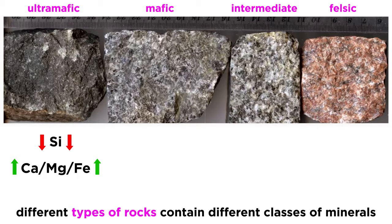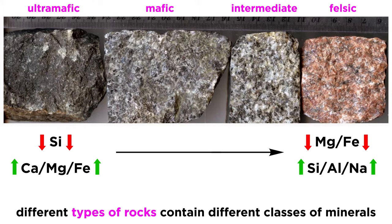For example, mafic rocks, which are depleted in silica and rich in calcium, magnesium, and iron, tend to be composed of different classes of minerals than felsic rocks, which are rich in silica, aluminum, and sodium, and depleted in magnesium and iron.